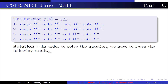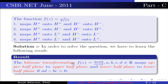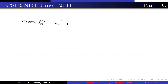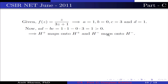To solve, we use the result: the bilinear transformation f(z) = (az+b)/(cz+d) with a, b, c, d ∈ ℝ maps the upper half-plane to the upper half-plane and lower to lower if ad - bc > 0. For f(z) = z/(3z+1), a=1, b=0, c=3, d=1. So ad - bc = 1·1 - 0·3 = 1 > 0. This implies H⁺ maps onto H⁺ and H⁻ maps onto H⁻. Hence option 1 is true.